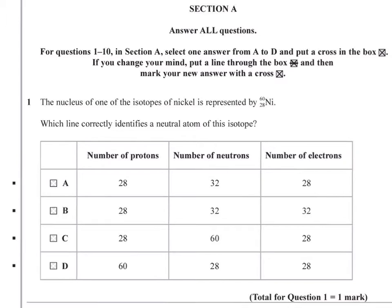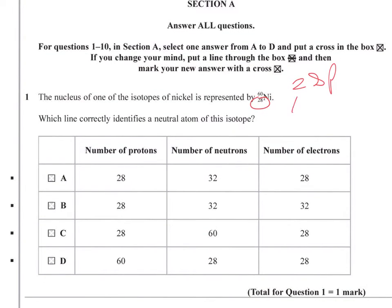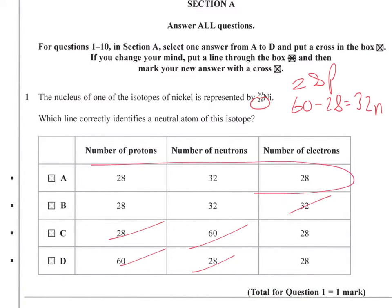The 28 tells us that there are 28 protons. The 60 tells us the total number of nucleons, so there are 60 minus 28, which is 32 neutrons. So we're looking for something that has 28 protons and 32 neutrons, so we can rule out those options. And for a neutral atom, we have to have the same number of electrons as protons, so we can rule out that one too. And that means it must be this one.